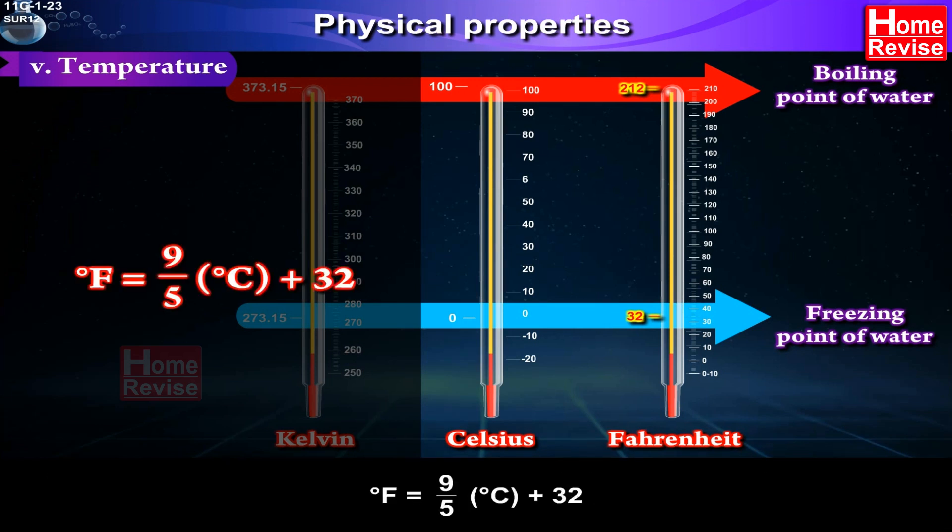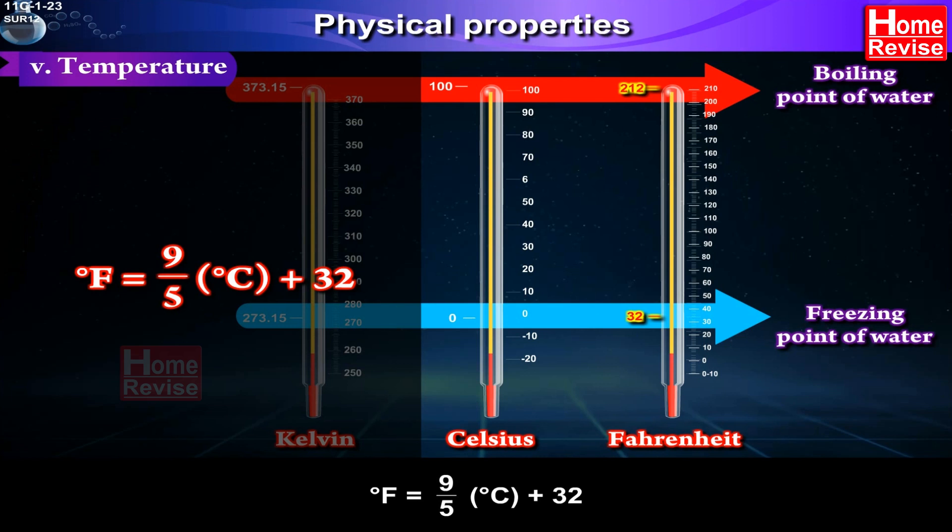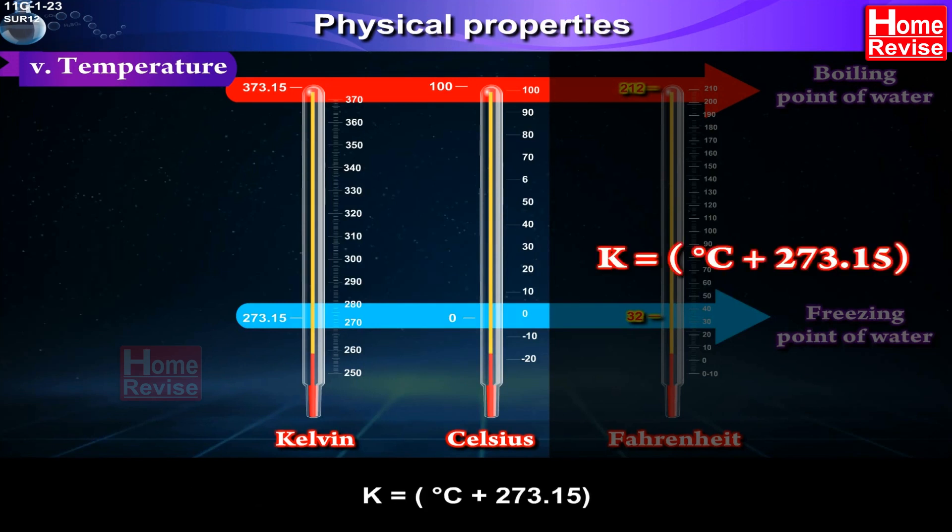Degree Fahrenheit is equal to 9 upon 5 degree centigrade plus 32. The Kelvin scale is related to Celsius scale as follows: K is equal to degree centigrade plus 273.15.